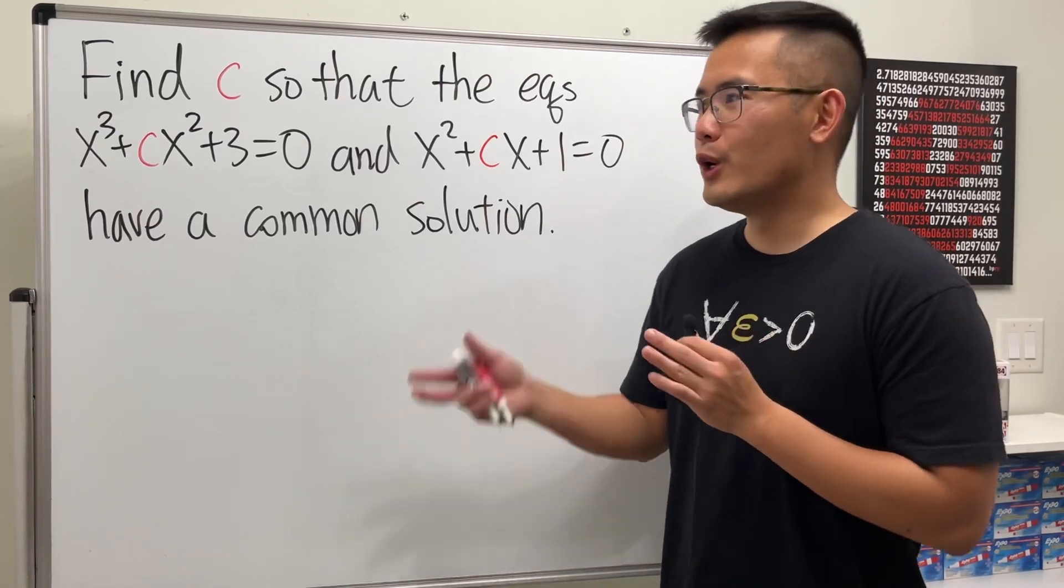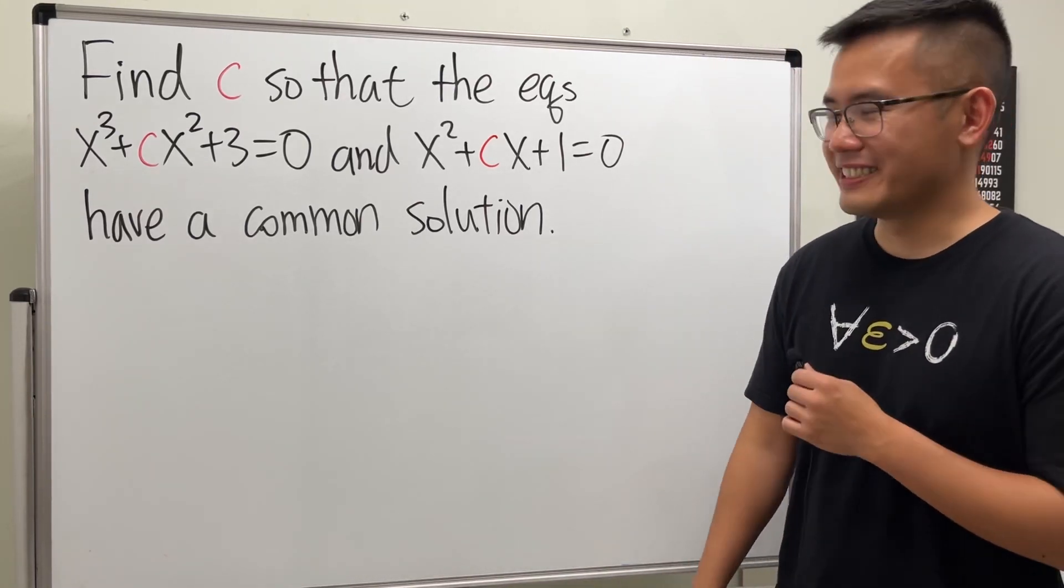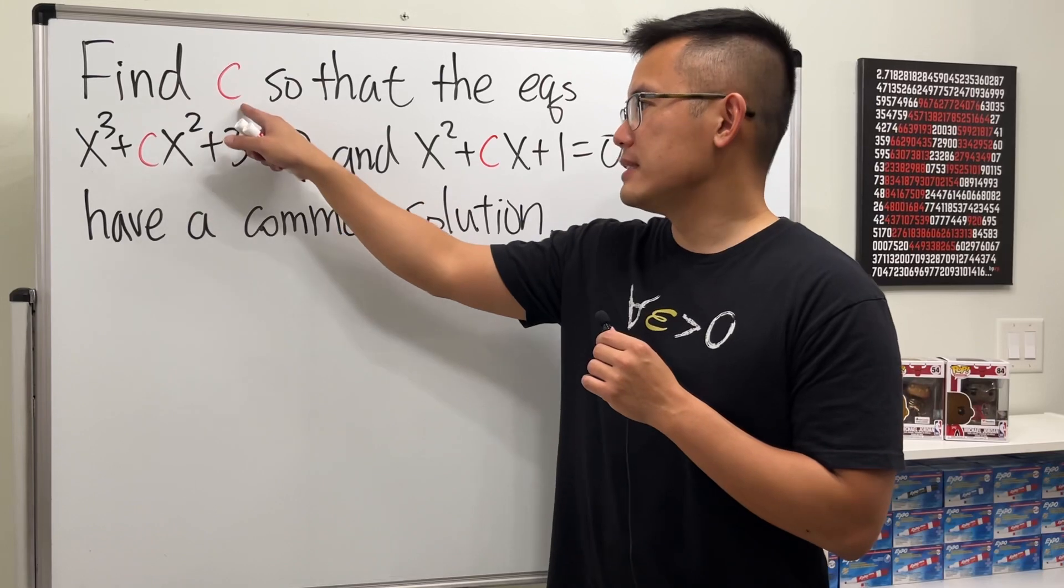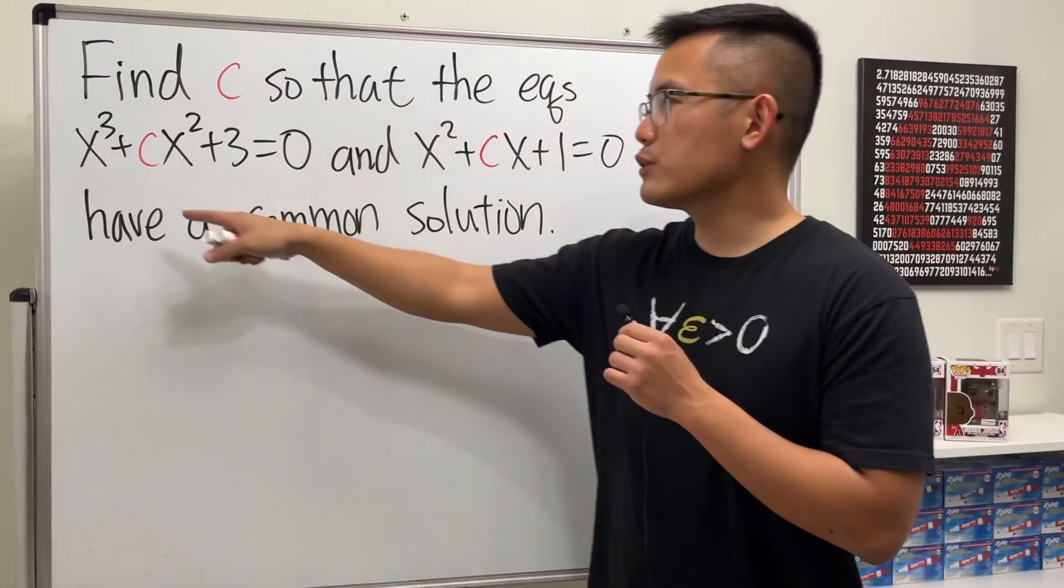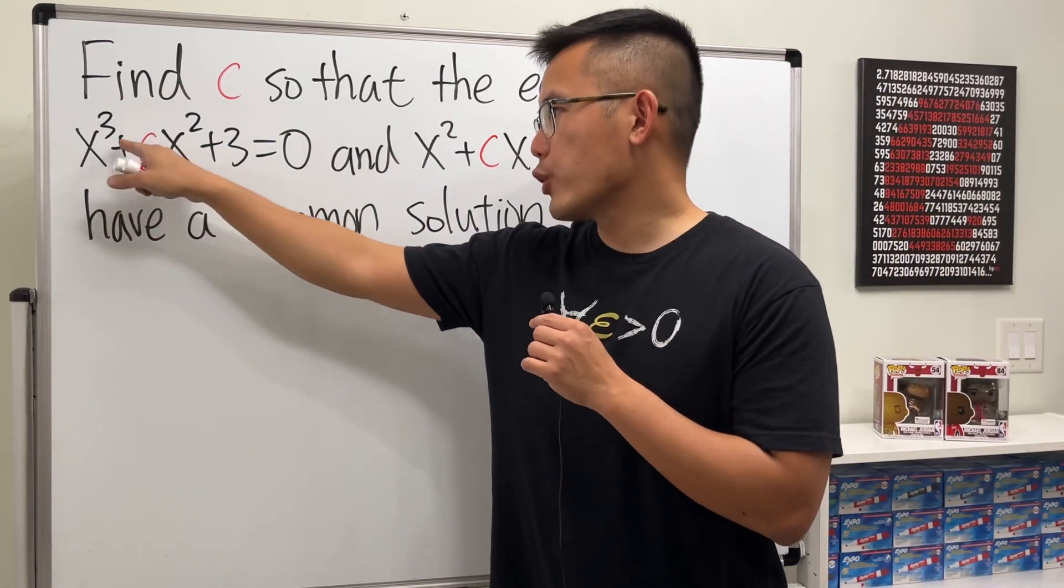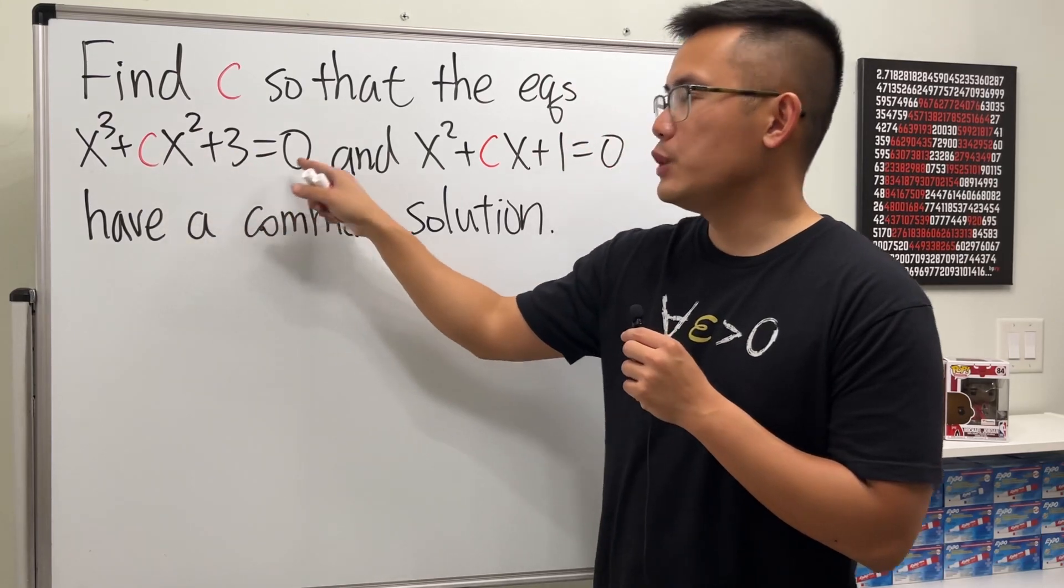And I will also read this for you guys. Check this out: can we find c so that the equations - the first one is a cubic equation - we have x cubed plus c x squared plus 3 is equal to zero.